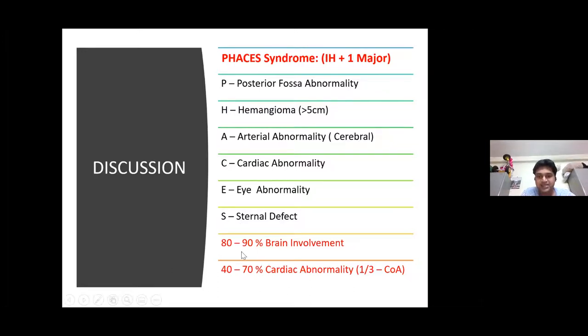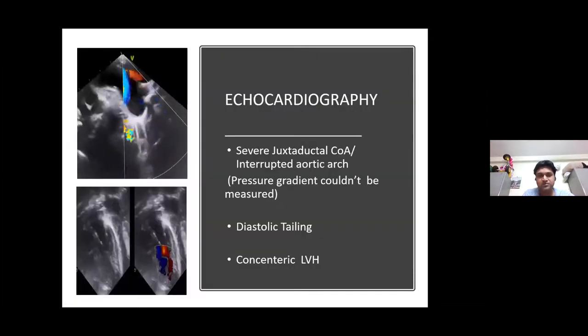In 80–90% of cases there will be brain involvement. In 40–70% of cases we will have some sort of cardiac abnormality. And the most common cardiac association is coarctation of the aorta.